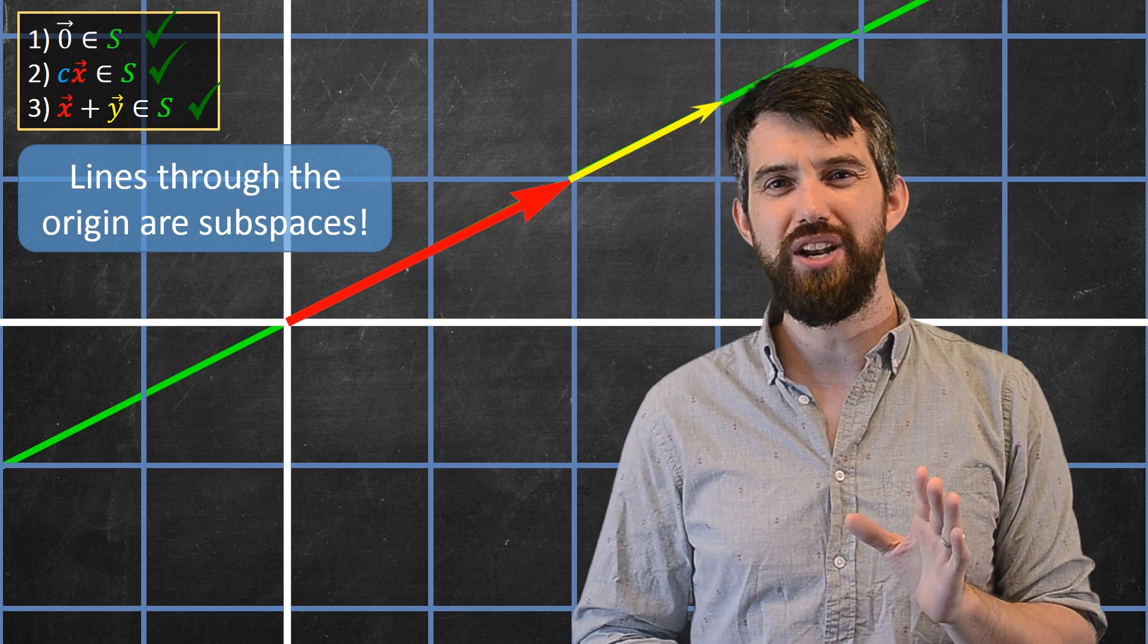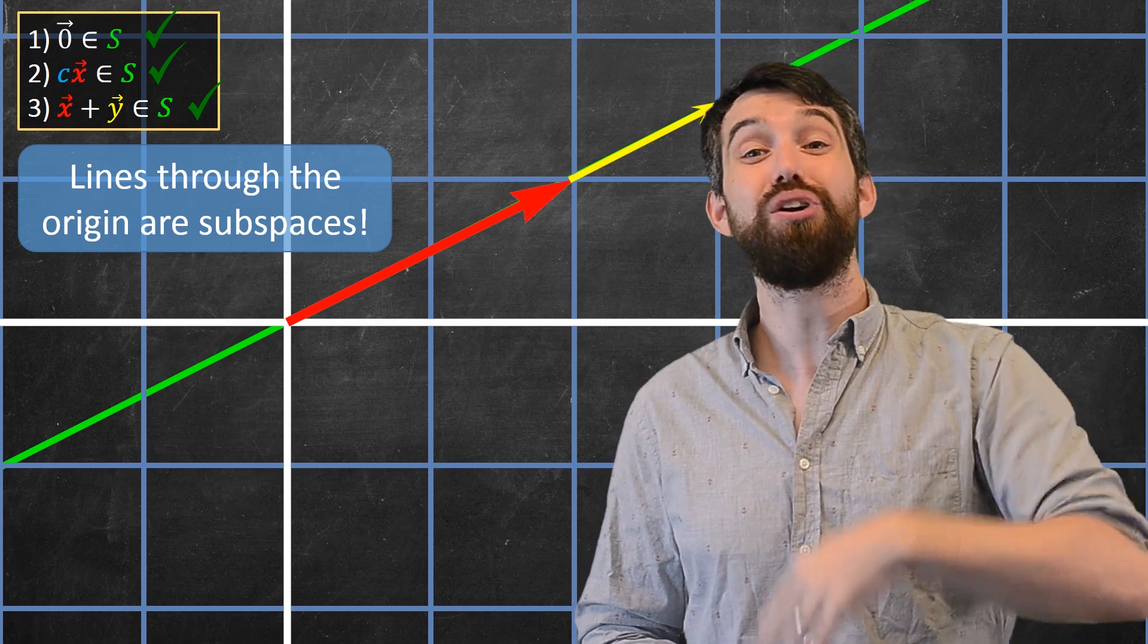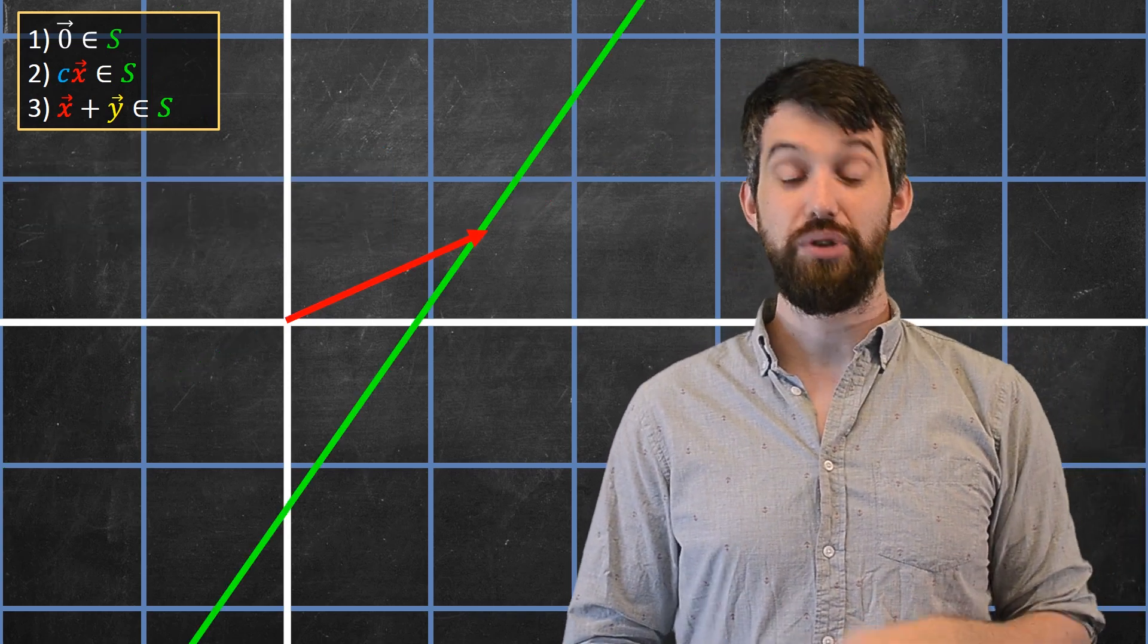Well, does it have to go through the origin? Let's try that. Okay, let's now look at a line that does not go through the origin. So here's an example.